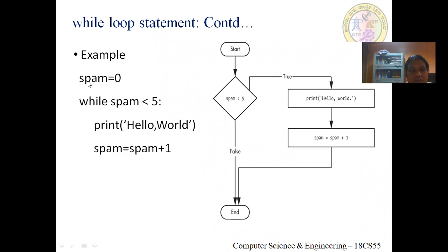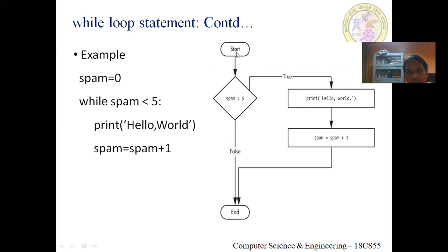Here is an example. A variable spam is set to zero. While spam is less than five, we print 'hello world' and increment spam by one. The comparison operator checks spam against five each iteration. Looking at the flowchart: first we check if spam is less than five — if true, the while clause executes, printing 'hello world' and incrementing spam from zero to one. This continues over and over as long as the condition is true.